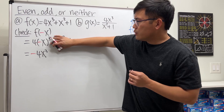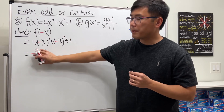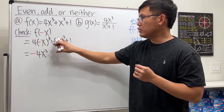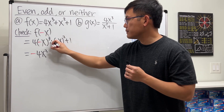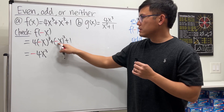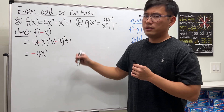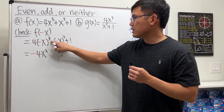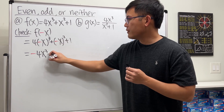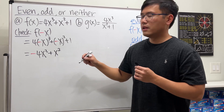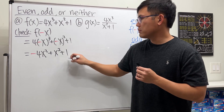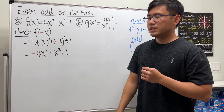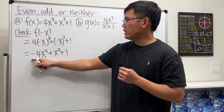If you just look at the first term, by itself it would have been odd, but we still have to consider the other terms. For the second term, negative 1 squared is positive 1, so the negative disappears and we get positive x squared. Then the plus 1 stays as plus 1.